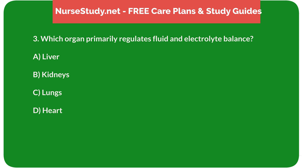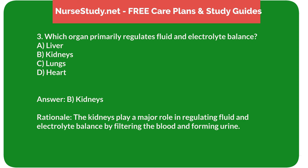Question 3: Which organ primarily regulates fluid and electrolyte balance? A. Liver. B. Kidneys. C. Lungs. D. Heart. Answer: B. Kidneys. Rationale: The kidneys play a major role in regulating fluid and electrolyte balance by filtering the blood and forming urine.